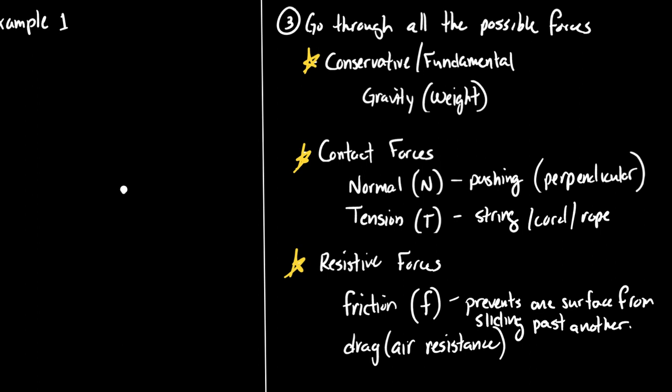For today, we won't have air resistance as one of our forces. All the other ones are potential forces for today's examples. We're going to do a bunch of examples, but only drawing free body diagrams. I'd encourage you to have a ruler out, and a protractor might not be a bad idea in the future. We're going to start with example number one: the book on my desk. I want to draw a free body diagram indicating the forces acting on the book.